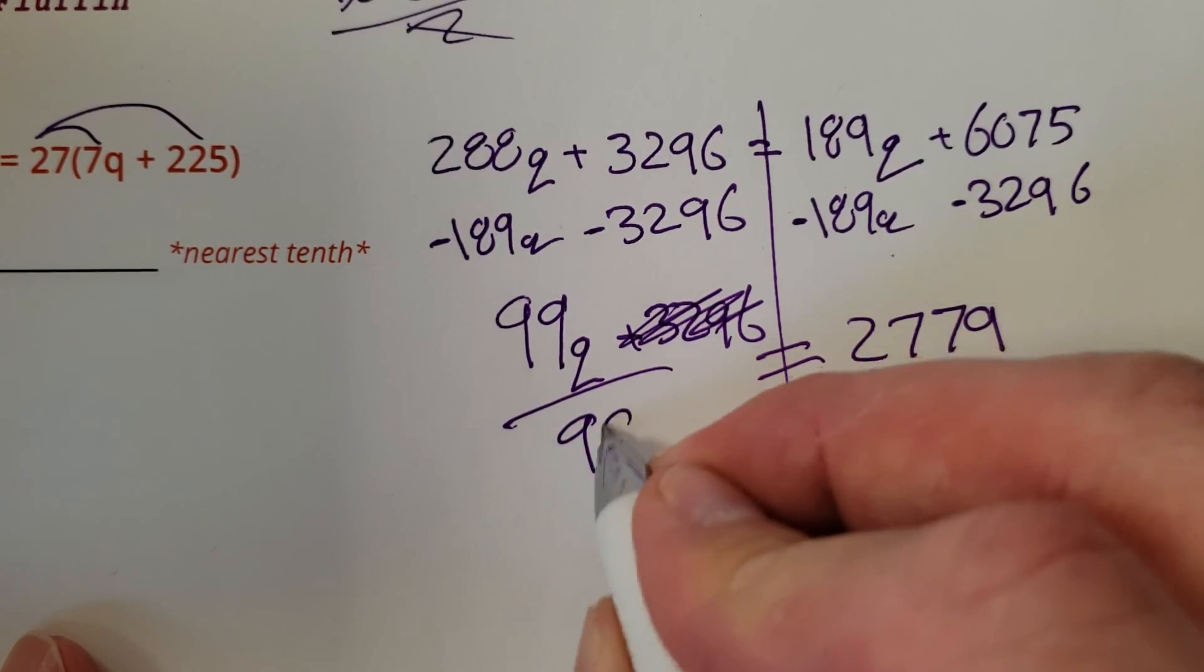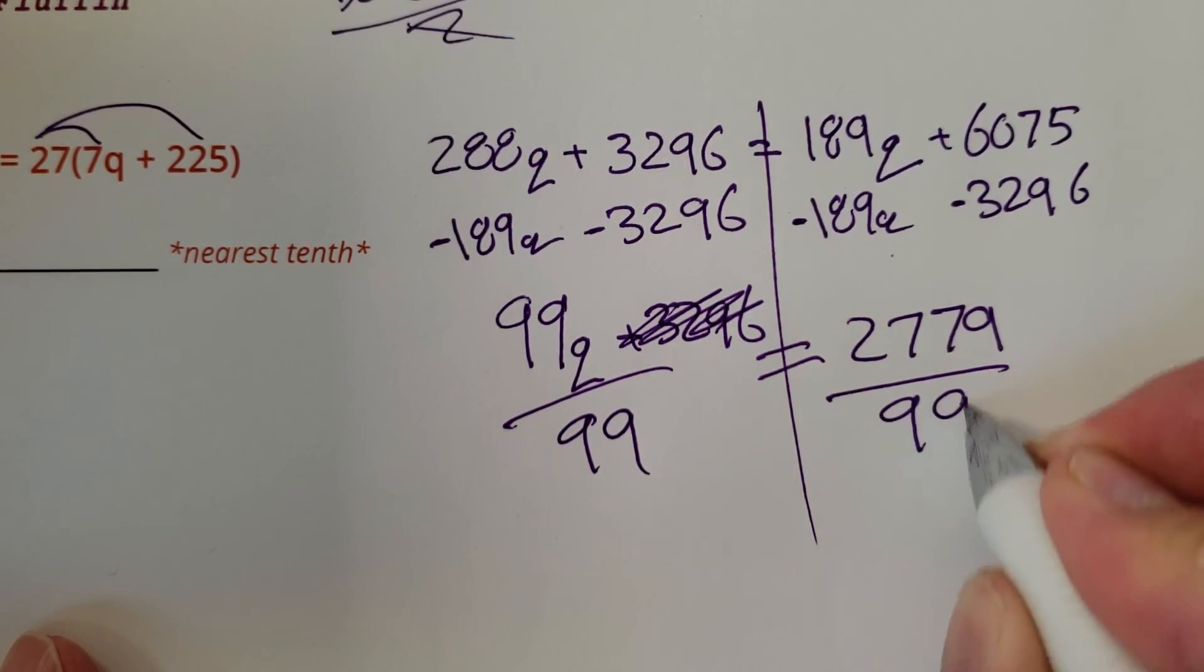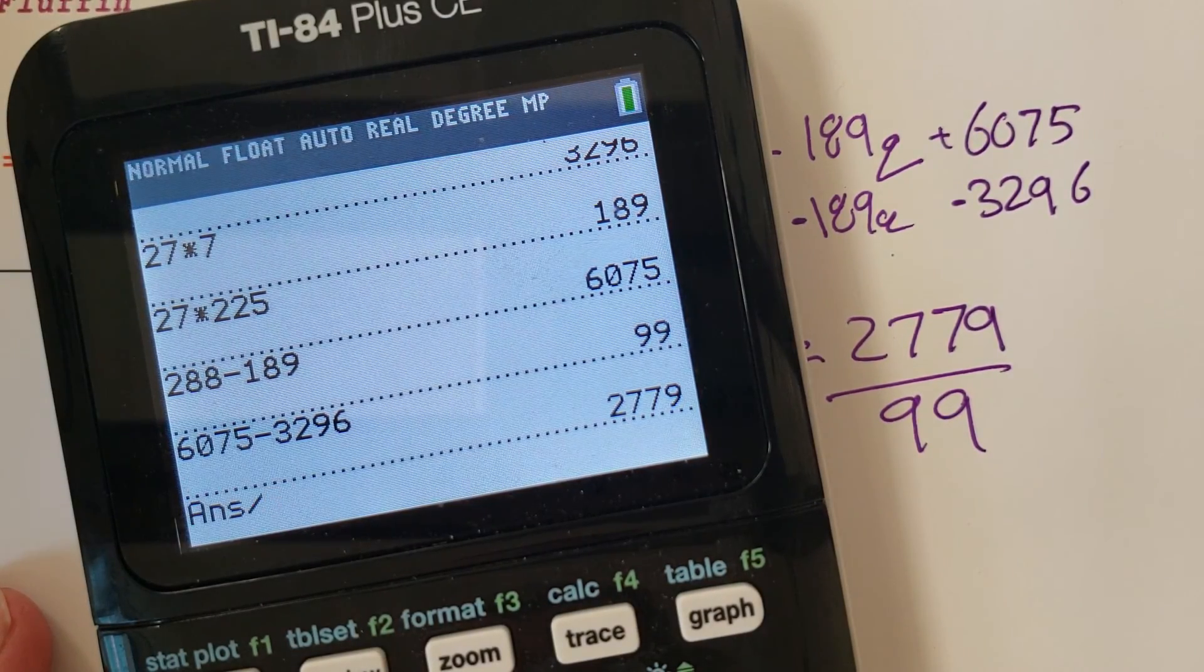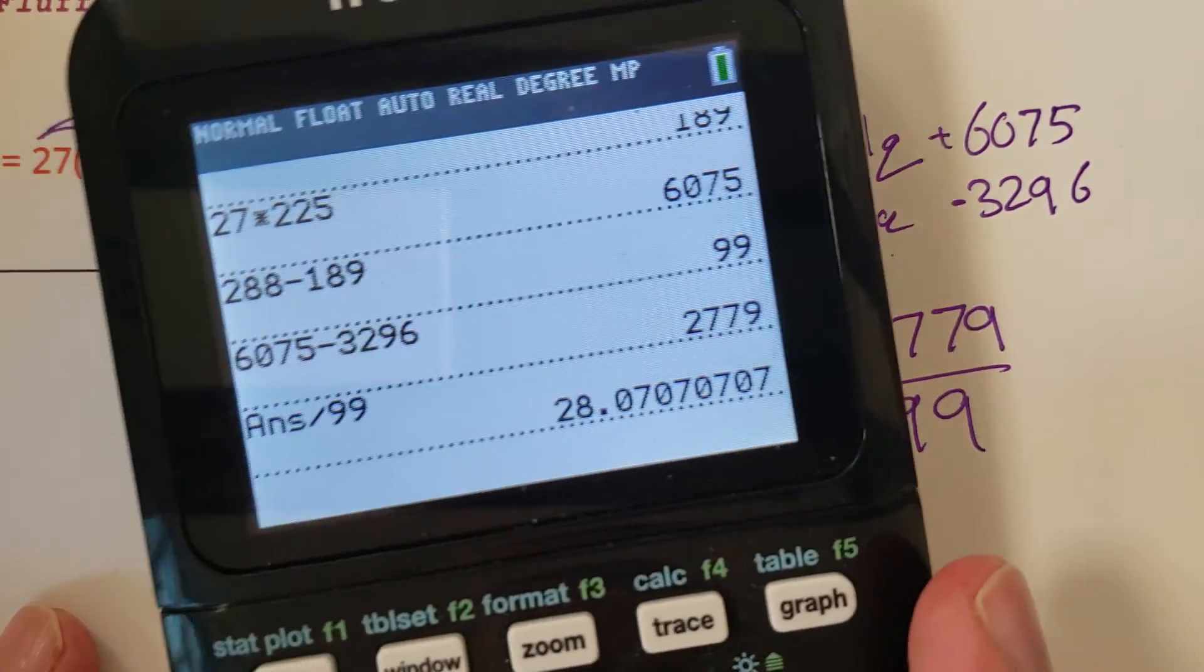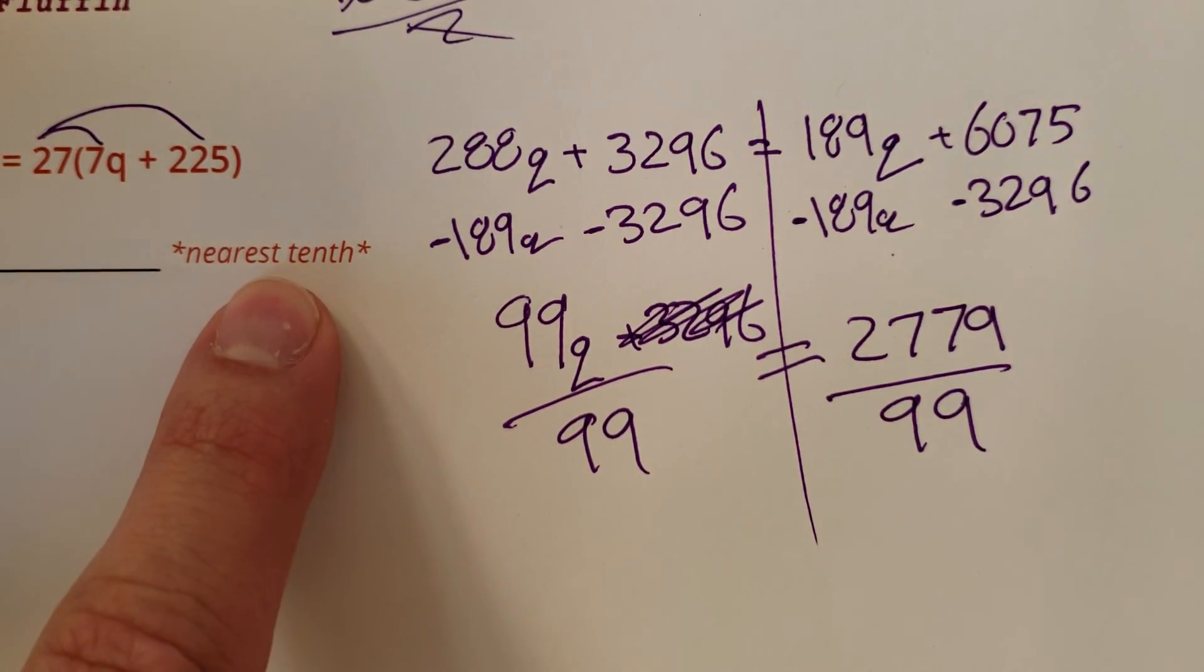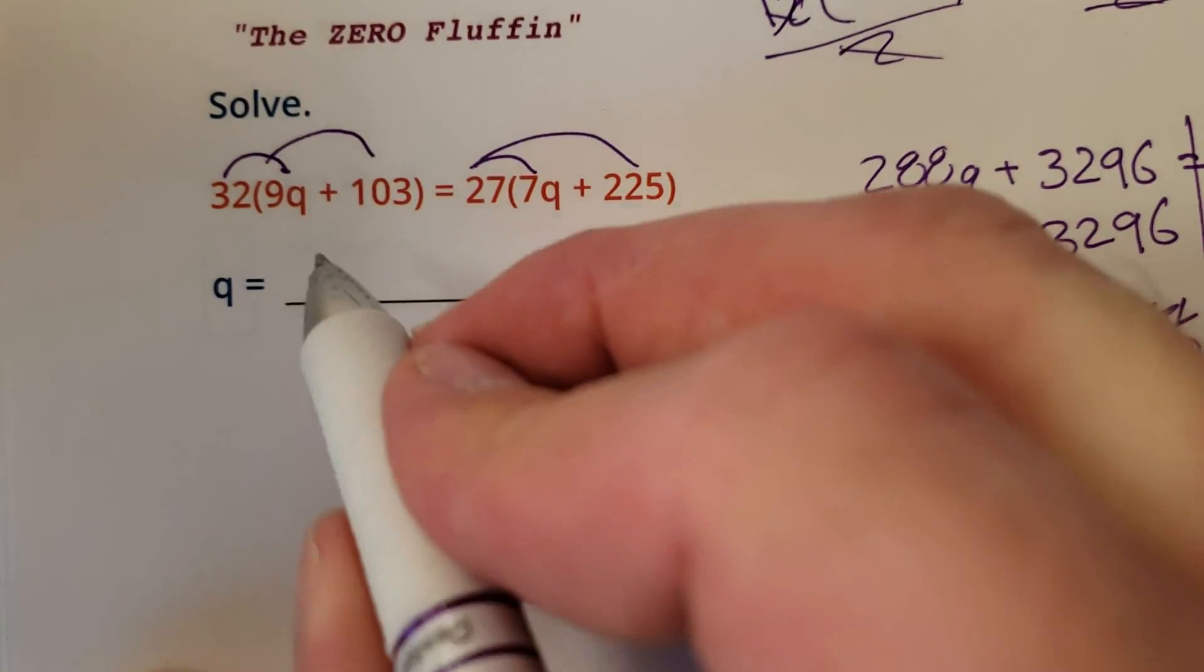Divide both sides by 99. Here we go. 2779 divided by 99. These big numbers. 28 point... nearest tenth, 28.1. Alright, cool.